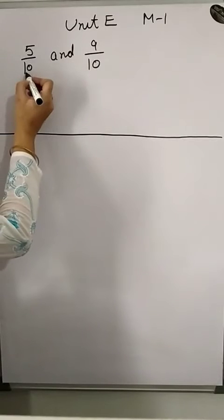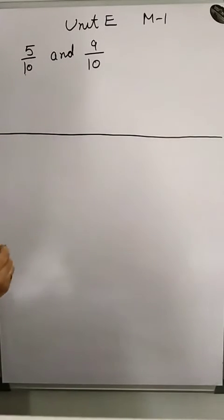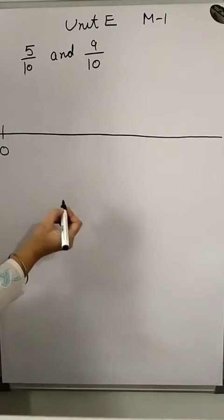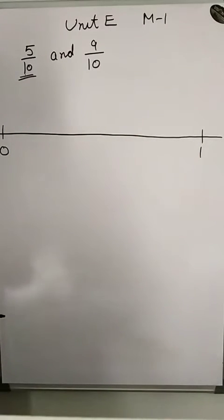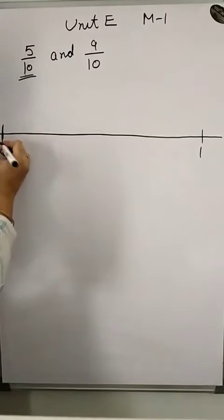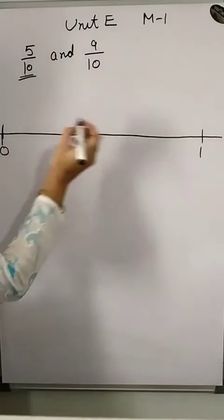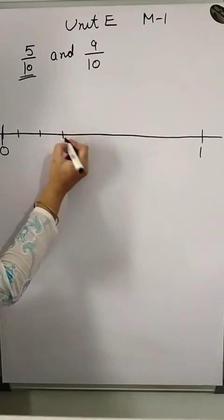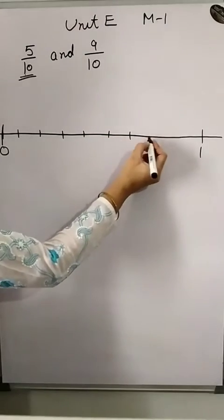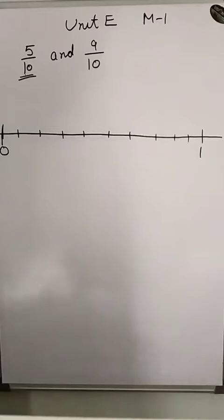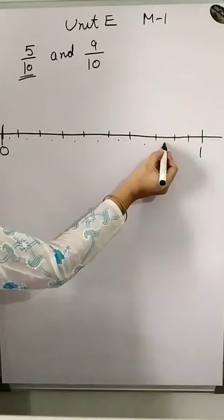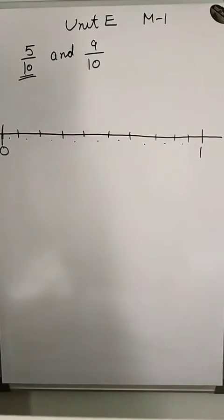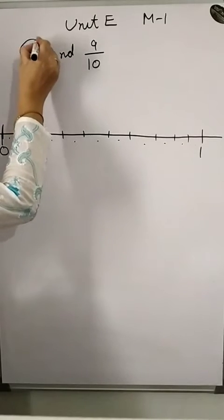The denominator is equal to 10, so we write 0 and 1 on the number line and divide the line into 10 equal parts. Ten equal parts means 9 lines between the two endpoints, so we count 1, 2, 3, 4, 5, 6, 7, 8, 9 — these are 9 lines giving us 10 parts.